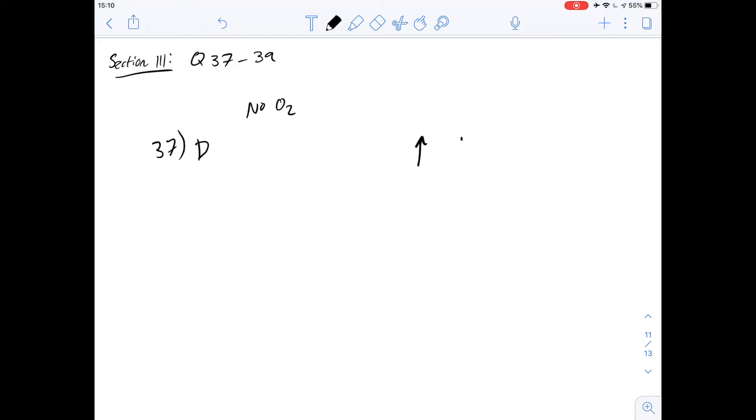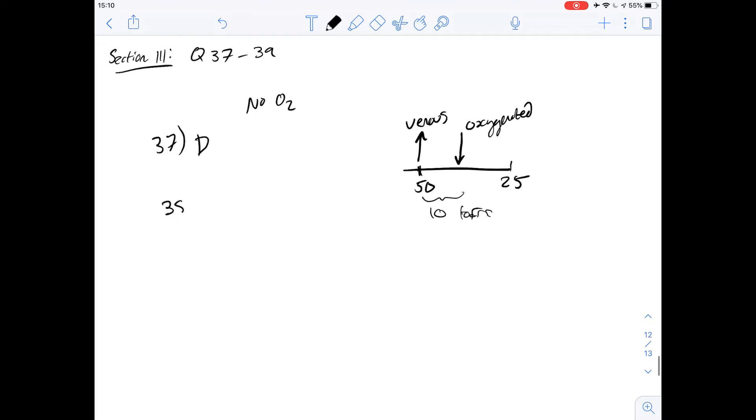There are these two arrows that look like this. And on the scale at the bottom, you can see down here, there's 25 torr of pressure. And at 50, you can see here is where the venous blood is. So this is the venous. And this is the oxygenated. This is just a part of the graph I'm redrawing here. You can see that from the scale, this would be roughly around 10 torr of pressure difference. And so the answer for number 38 is A. It's really just knowing where to look for this one.